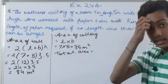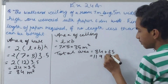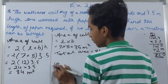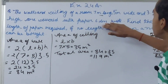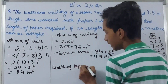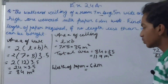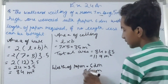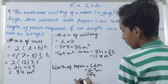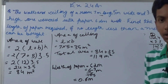The total area is 84 + 35 = 119 square meters. Now, the width of the paper is 6 decimeters. Converting: 6 decimeters = 6/10 meters = 0.6 meters. So the width of the paper is 0.6 meters.